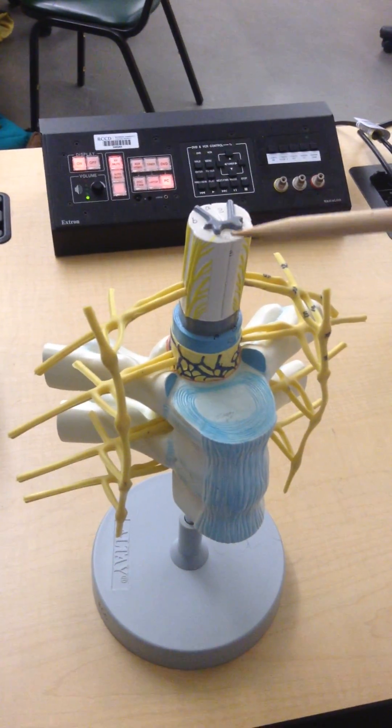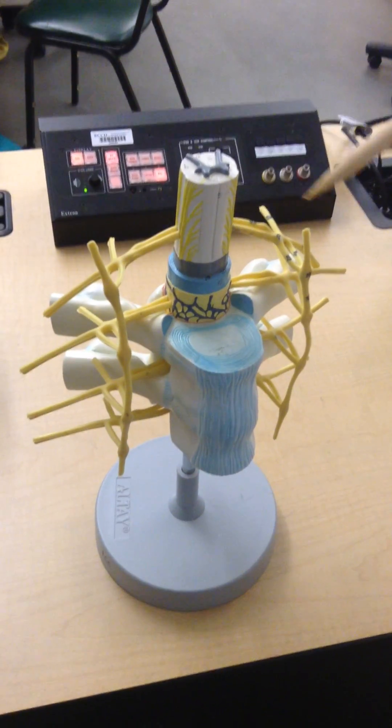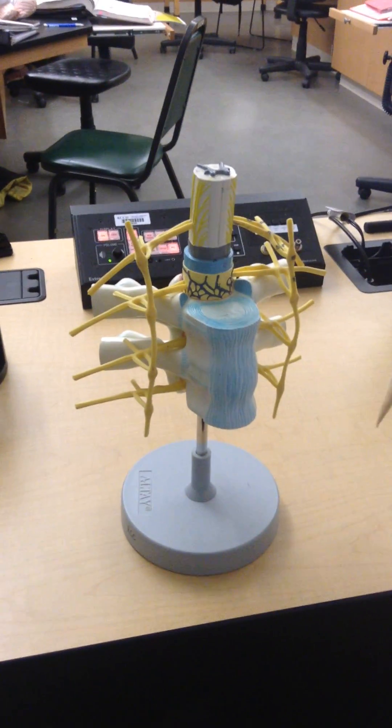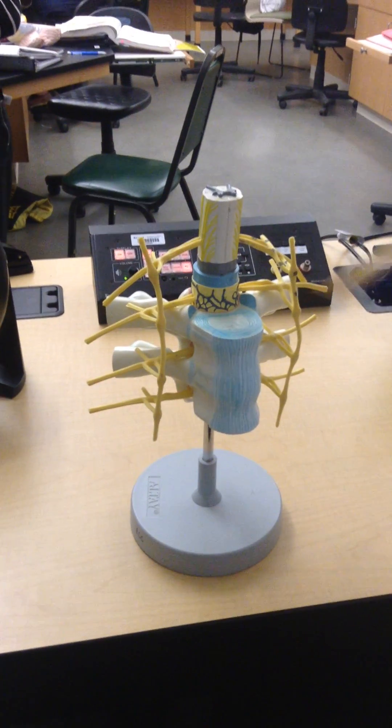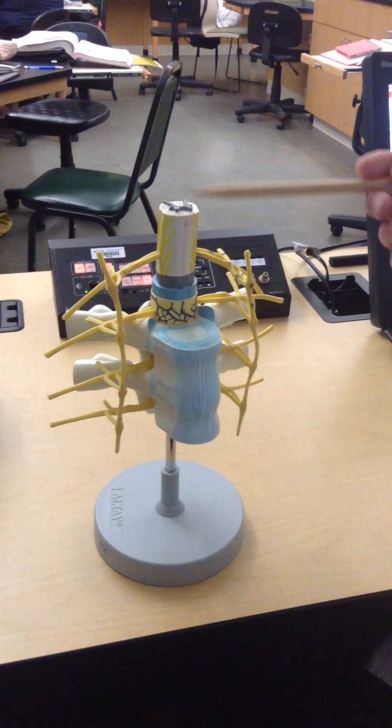and this is what initiates the thoracolumbar outflow and stimulates the pre- and postganglionic neurons or structures in the line that will help to give you a sympathetic response to something that you are threatened by. So stress initiates this pathway.